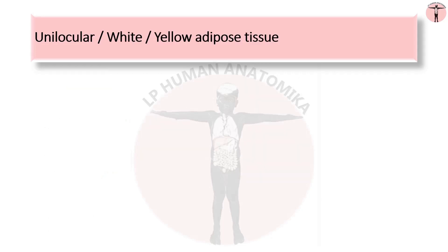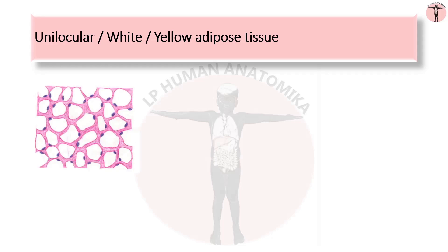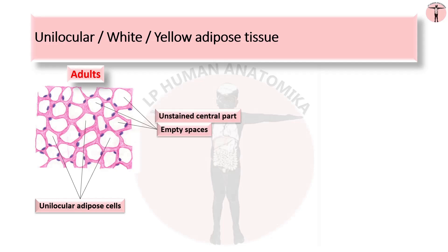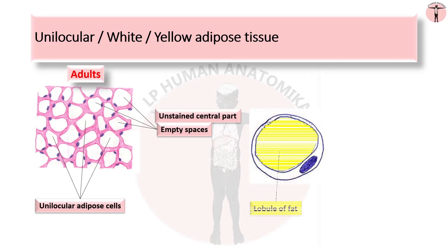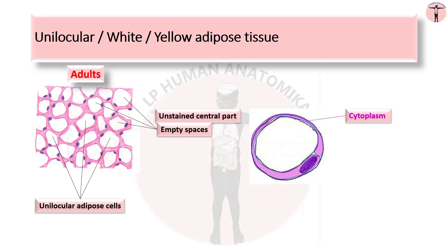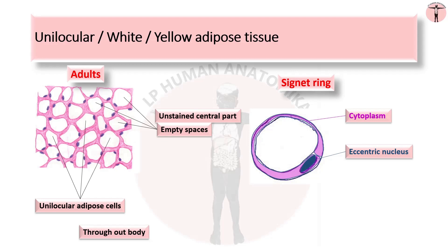The first type is unilocular adipose tissue. In adults, fat is stored as white or yellow single large droplets, seen as an unstained part in the section. Each cell is round in shape with a single fat droplet and a thin rim of cytoplasm. During histological preparation, the fat droplet is washed off and does not take up the stain, so a large empty space is seen. The nucleus is flattened and eccentric in position, hence the cell appears as a signet ring. It is present almost throughout the body as subcutaneous fat and acts as a thermal insulator; its distribution is regulated by sex hormones.